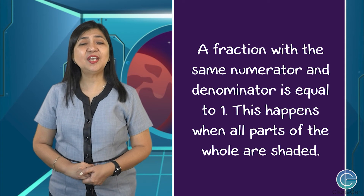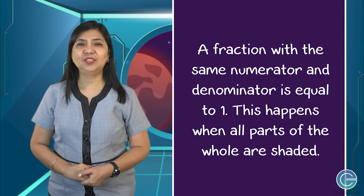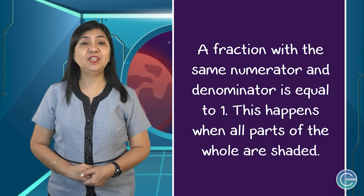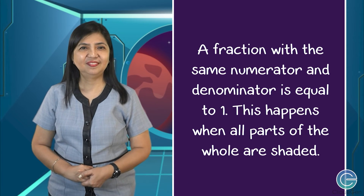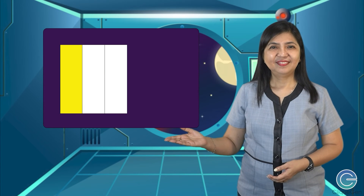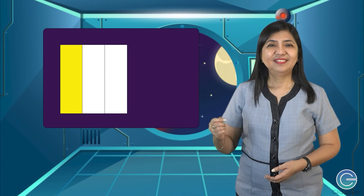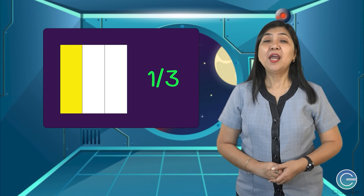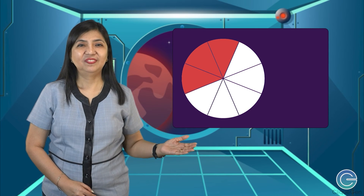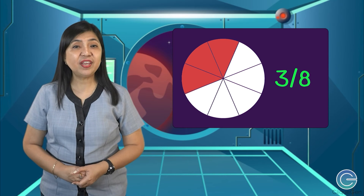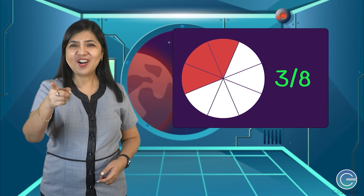Let's try these examples. Can you tell me what fraction of the given shape is shaded? Number one — one third is correct. Number two — if your answer is 3 over 8, you are correct.